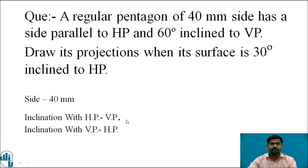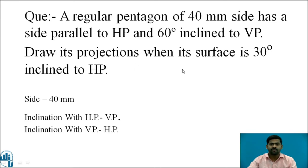Now consider the problem: a regular pentagon of 40 mm side has a side parallel to HP and 60 degrees inclined to the VP. Draw its projections when its surface is 30 degrees inclined to the HP.